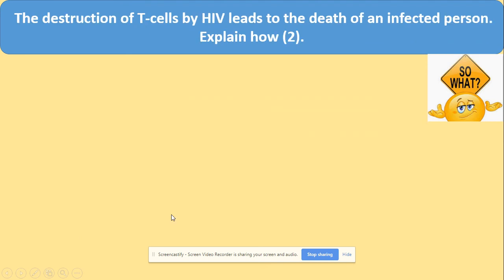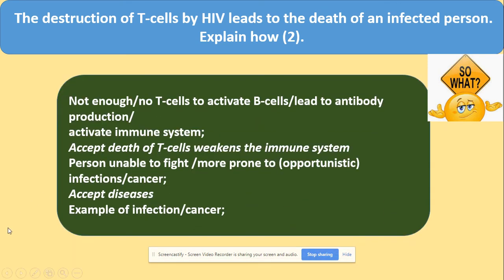The destruction of T helper cells by HIV leads to death of an infected person because if HIV keeps destroying T cells, there will not be enough T helper cells to activate B cells. Without B cell activation, the body cannot produce antibodies, so it cannot fight infections and may even develop cancers.